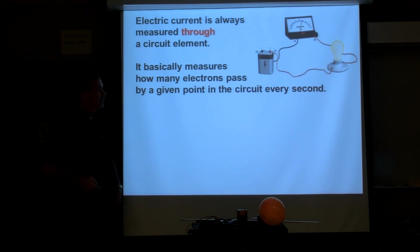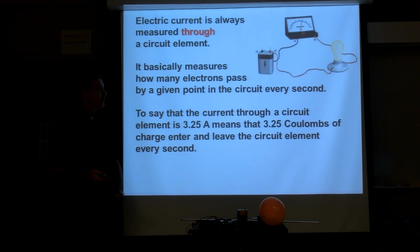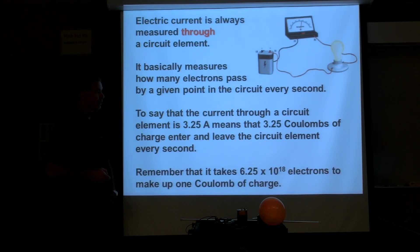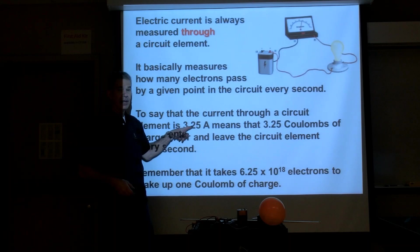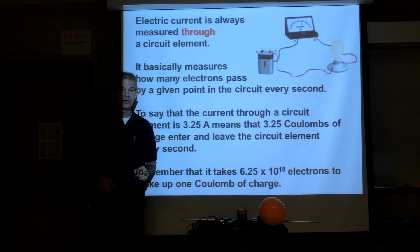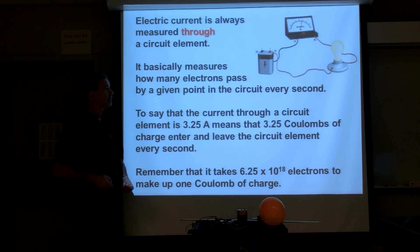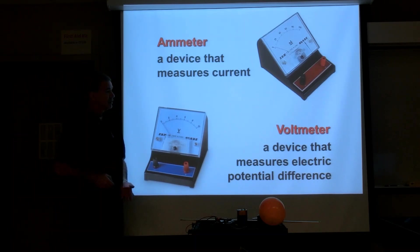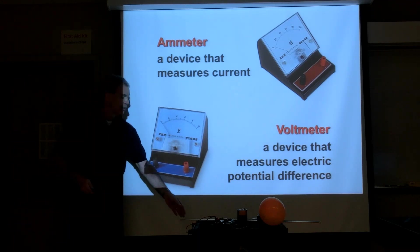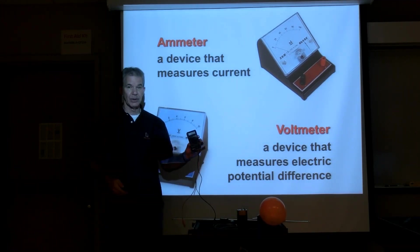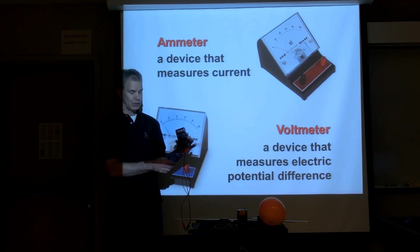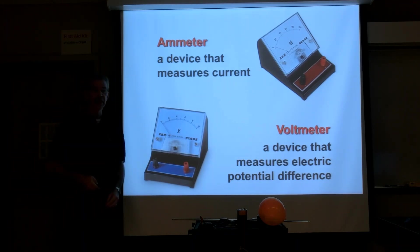It's measuring how many electrons pass by a given point every second. If we had 3.25 amps of current, that means 3.25 coulombs of charge passed by the point every second — and we can multiply 3.25 by 6.25 billion billion to know how many electrons are going past a given point every second. The device that measures current is an ammeter. The device that measures potential difference is the voltmeter. These are analog meters with a dial, but when using multimeters they're digital — we can click to an ammeter or voltmeter setting.